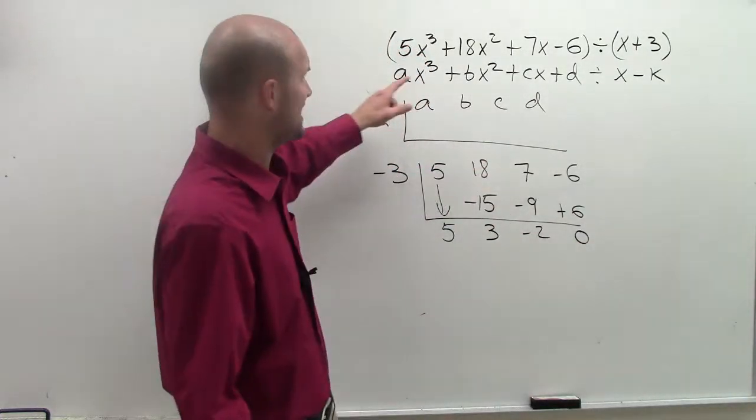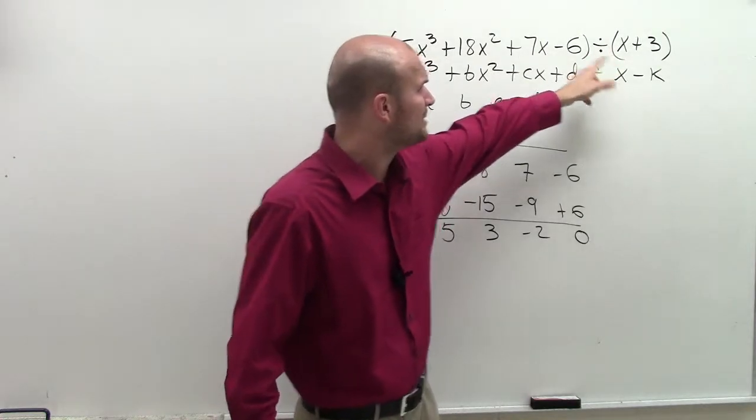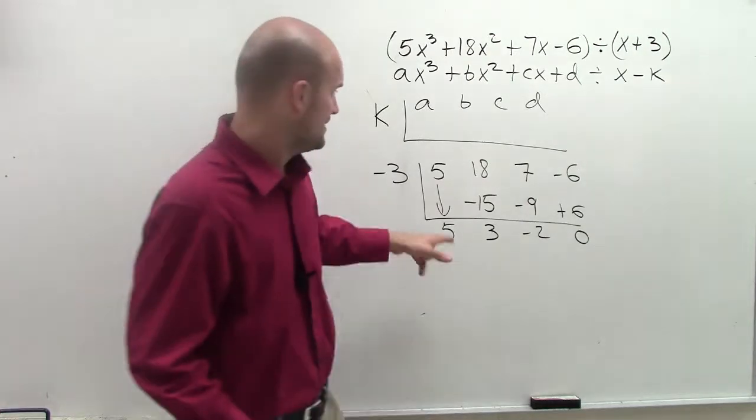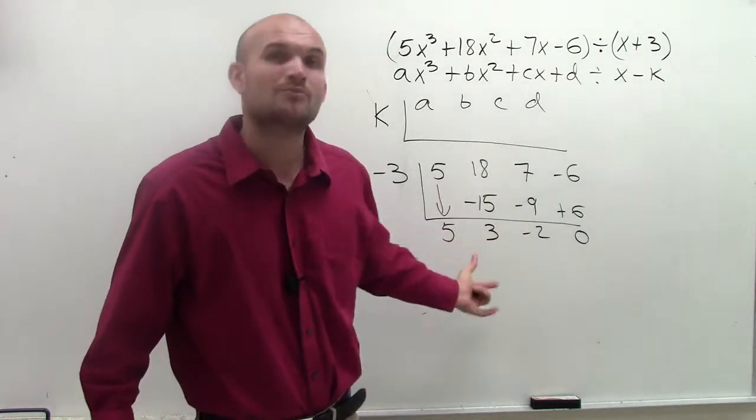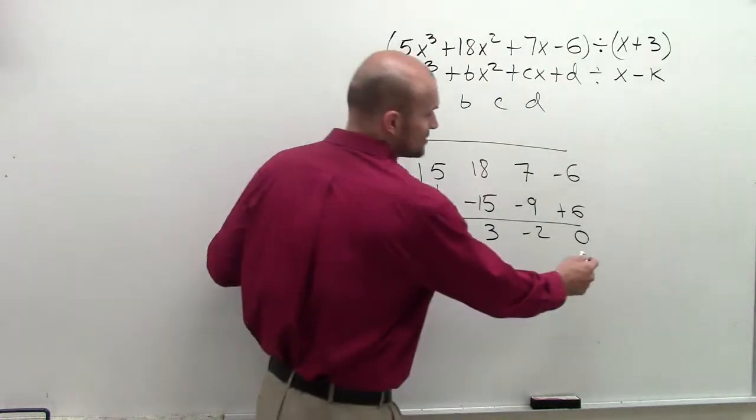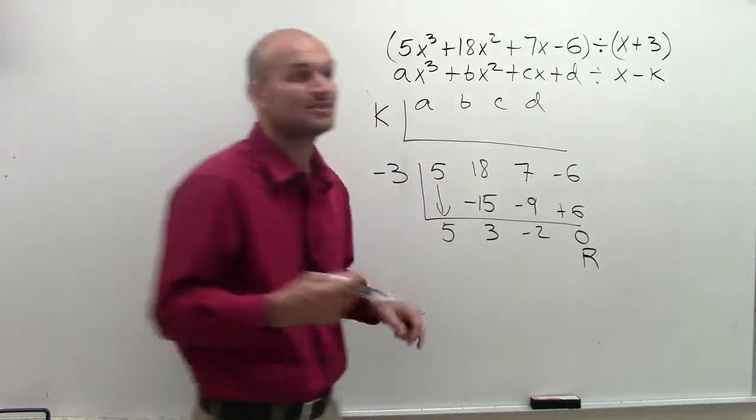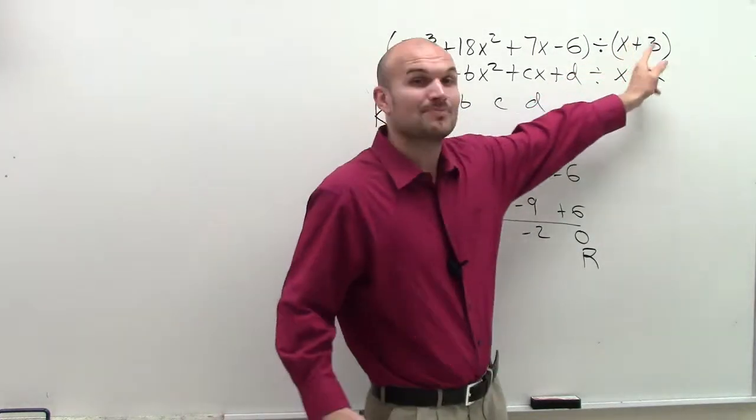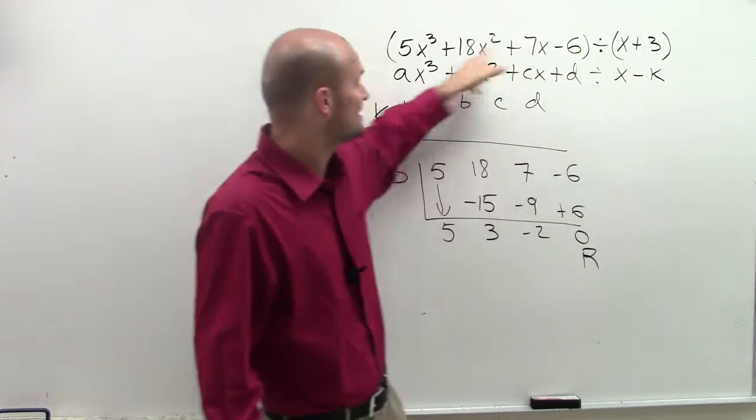But remember, if I divide a binomial into a polynomial, I should get another polynomial out, right? So these are just a set of numbers. How do we write this as a polynomial? Well, your first answer back here is always going to be your remainder. In this case, our remainder is 0, which is awesome, because that tells us x + 3 evenly divides into this polynomial.